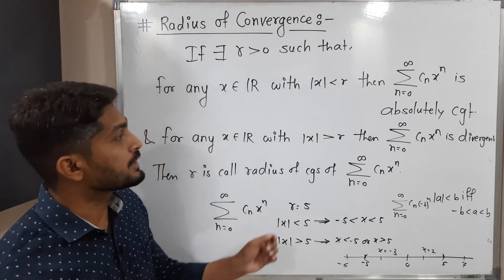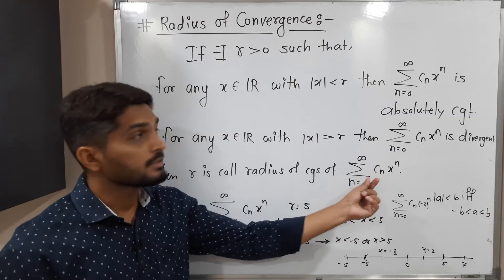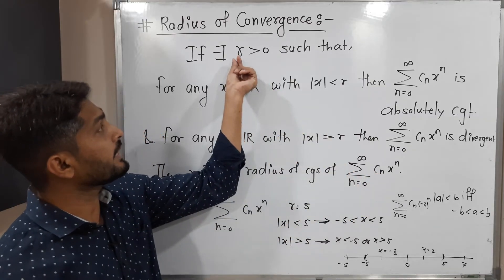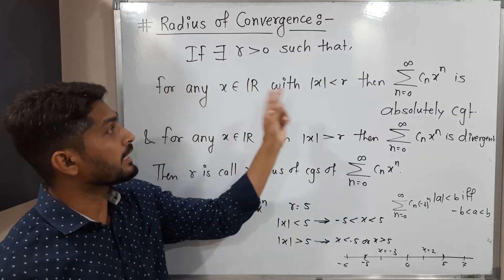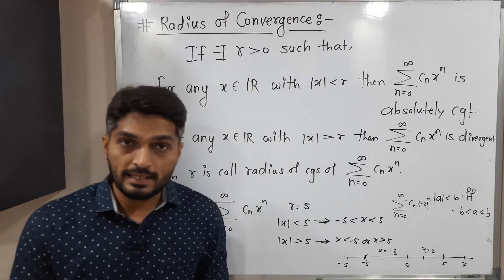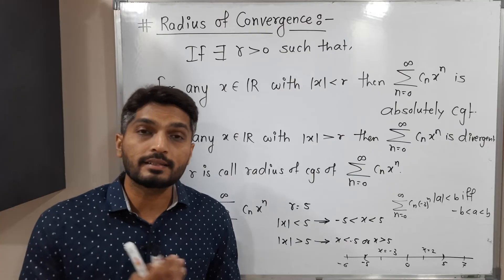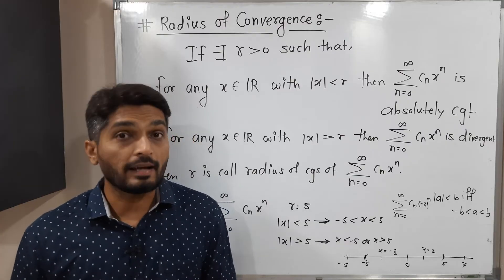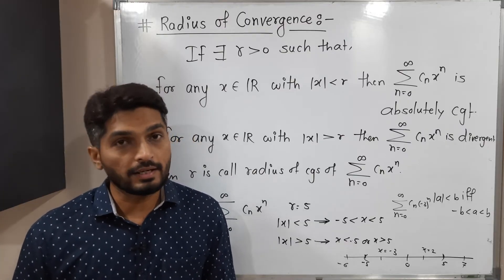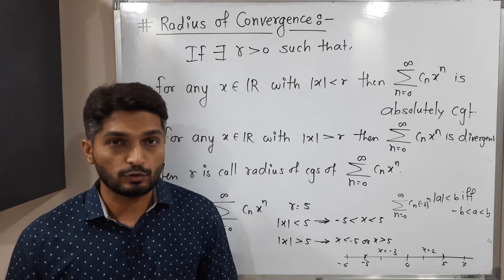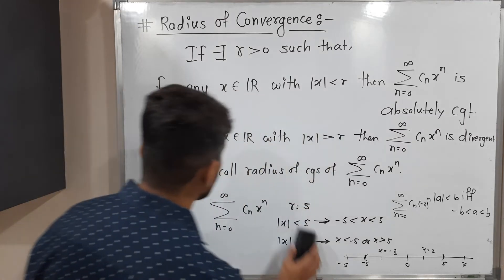So that is called radius of convergence. For any given power series, if we can find a positive real number r such that for |x| less than r the series is convergent and for |x| greater than r the series is divergent, then we say r is the radius of convergence of that power series. This is the definition of radius of convergence.